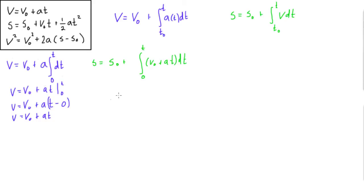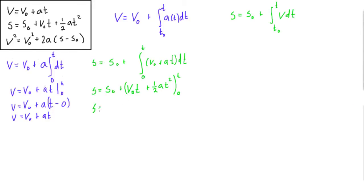Now we integrate. S equals S₀ plus — integrating V₀ with respect to T gives V₀T, and integrating aT gives ½aT². This is all evaluated from 0 to T. When we plug in 0, that whole expression goes to zero and drops away. So the result is S equals S₀ plus V₀T plus ½aT². That's kinematic equation number two.